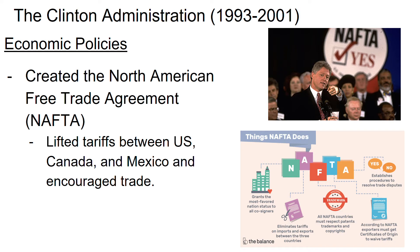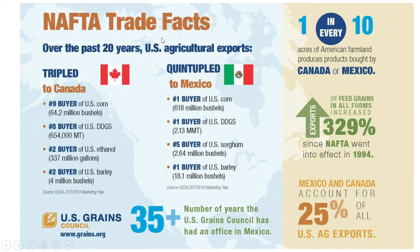Agriculture boomed in America because they were able to trade down into Mexico and into Canada as well — selling and creating products for them. In 20 years, basically our exports tripled for the amounts going to Canada and quintupled for the amounts going to Mexico. So they were one of our number one buyers. It basically created a lot more trade opportunity for the United States.